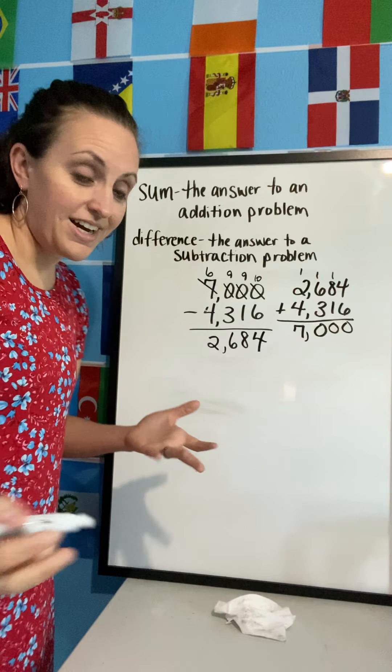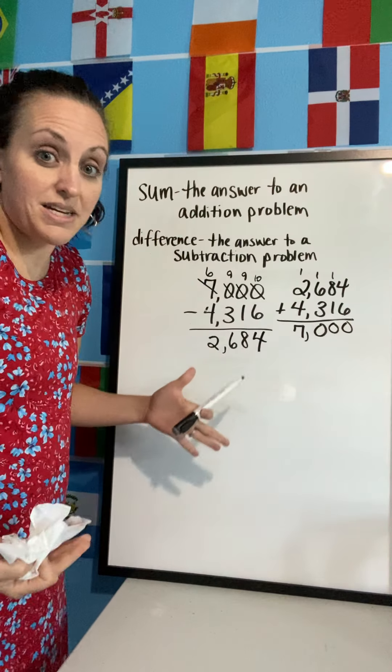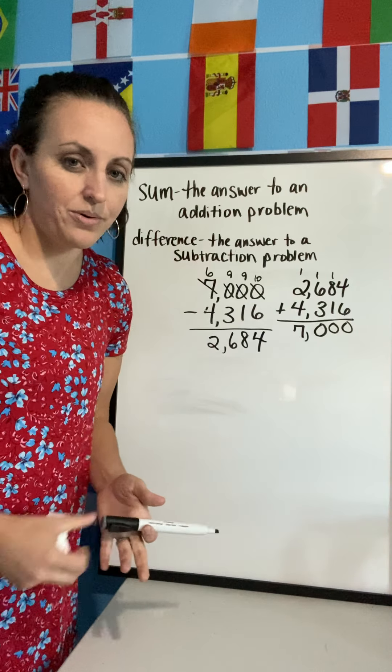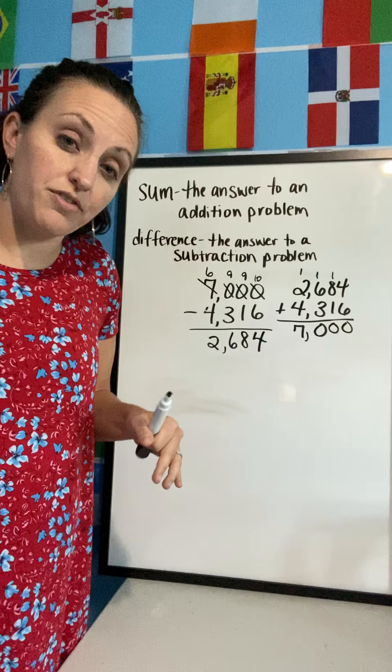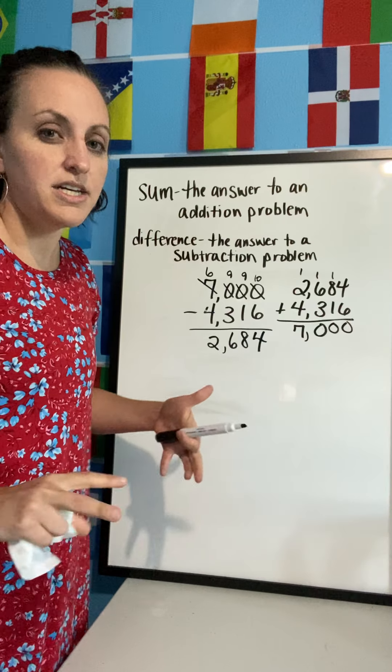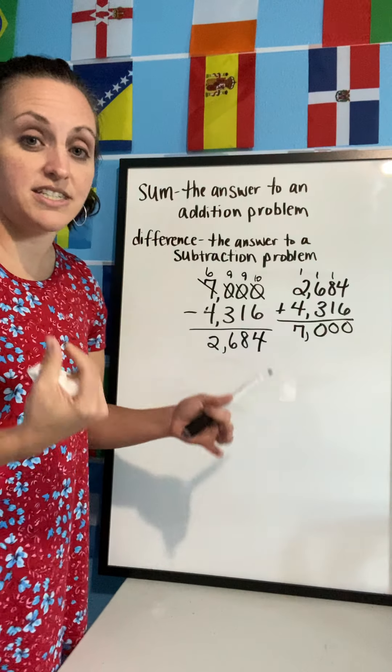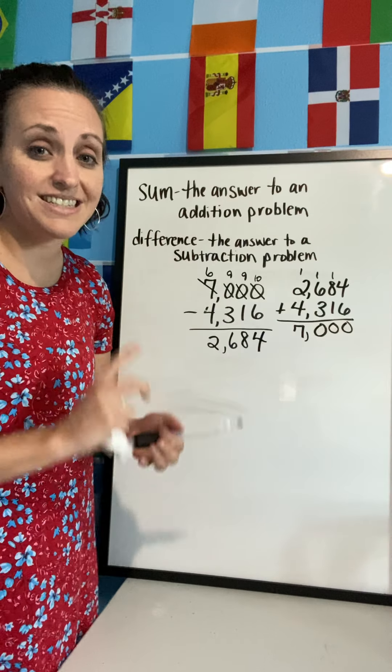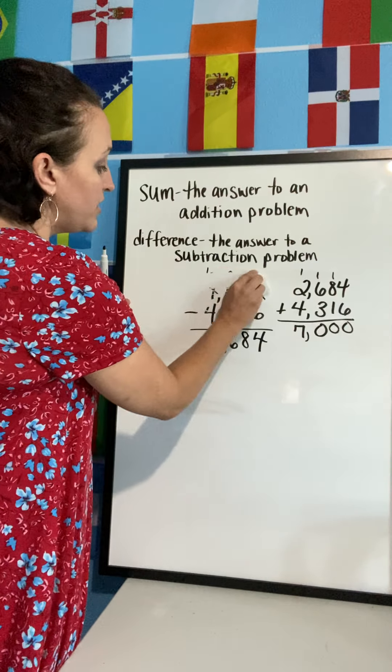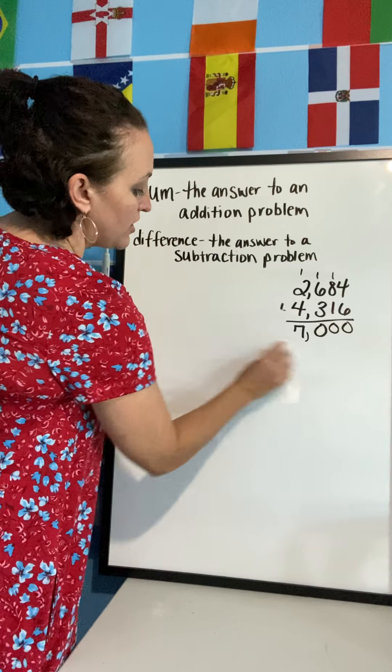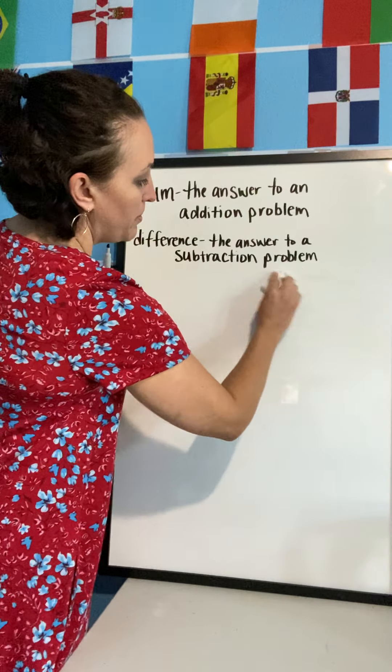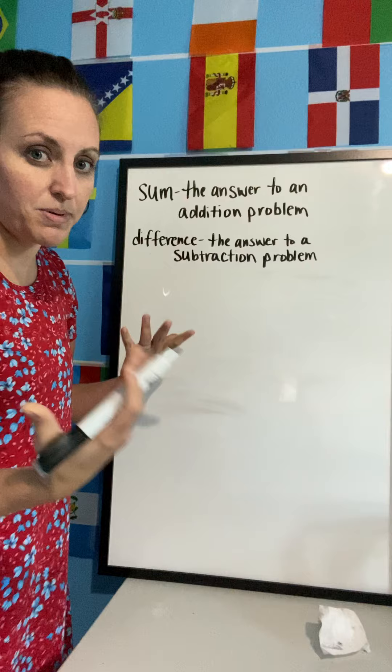All right, now this is basically what you were doing before with addition and subtraction. Again, we've just gone from having two and three digit numbers to having four and five digit numbers, but it's the same strategy. It's the same regrouping. It should look exactly the same. The other thing that might be a little bit different this year that you didn't do maybe in years past is adding three big numbers together.